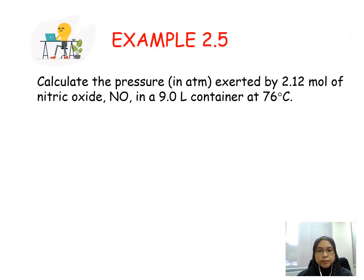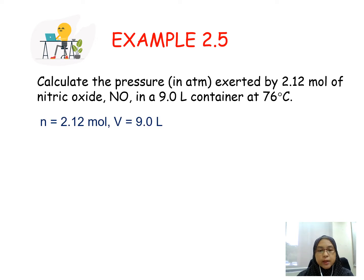Let's try example 2.5 in your course book. Calculate the pressure in atm exerted by 2.12 mol of nitric oxide NO in a 9.0 litre container at 76 degrees Celsius. So we have number of mol 2.12 mol and volume 9.0 litre.